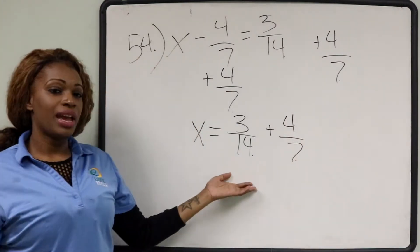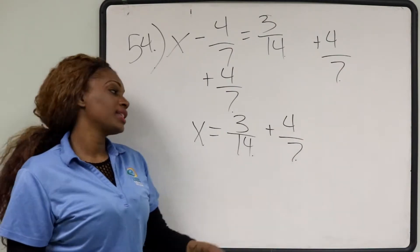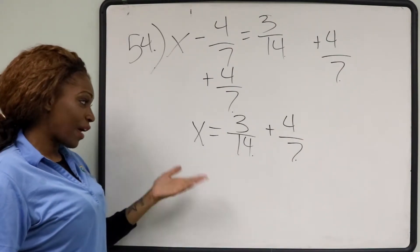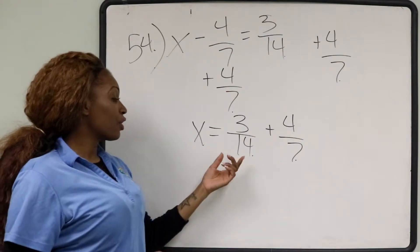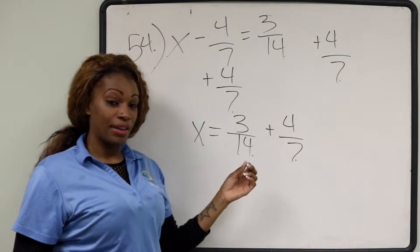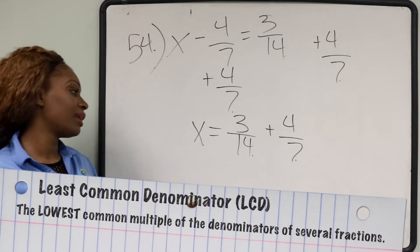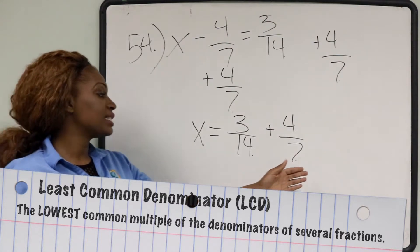But we're not done yet because we have to add 3 14ths plus 4 7ths. In order to add fractions, you need to make sure that your denominators equal each other. They should be the same value. In order to do that, we need to find the LCD, least common denominator, of 14 and 7.